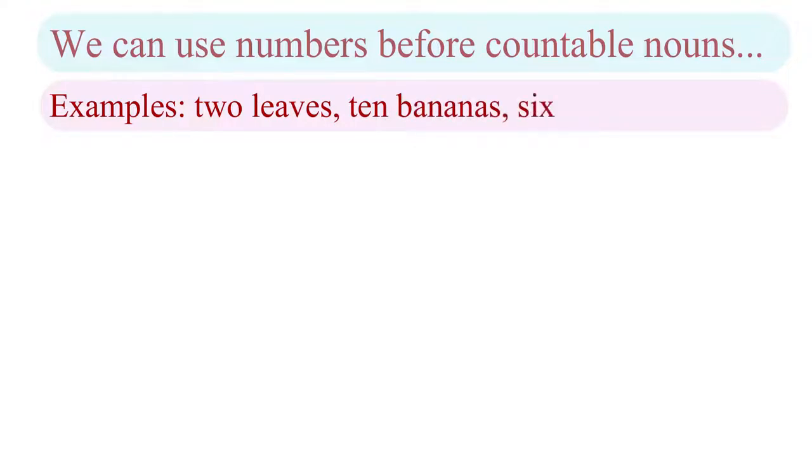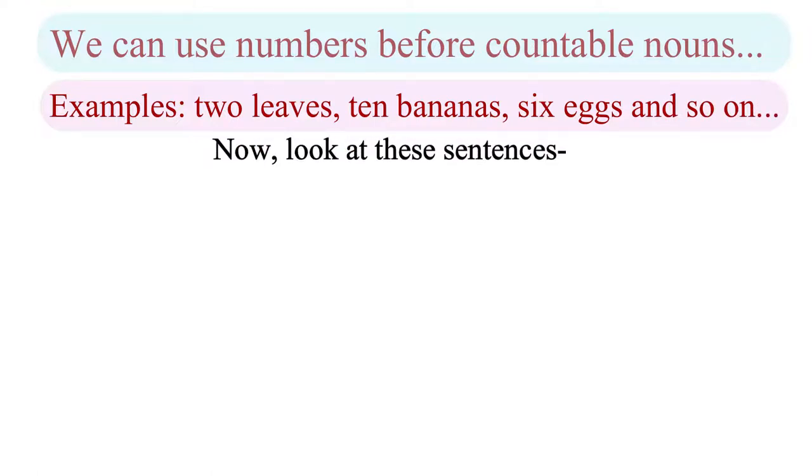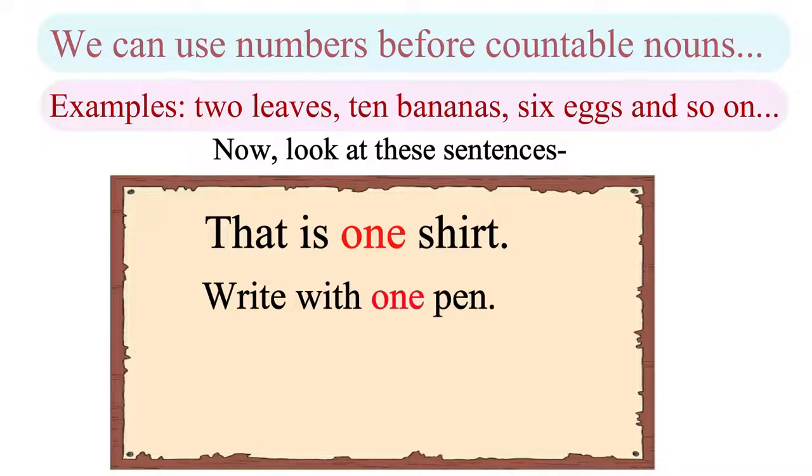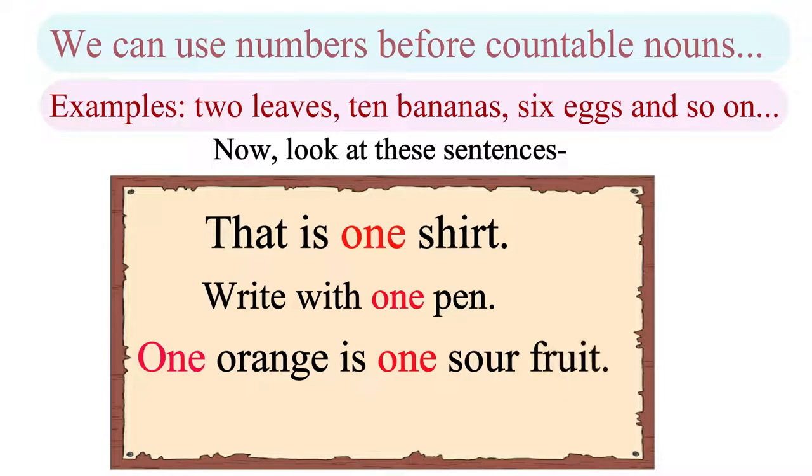We can use numbers before countable nouns. Examples: two leaves, ten bananas, six eggs and so on. Now, look at these sentences. That is one shirt. Write with one pen. One orange is one sour fruit. This is one cute cat.